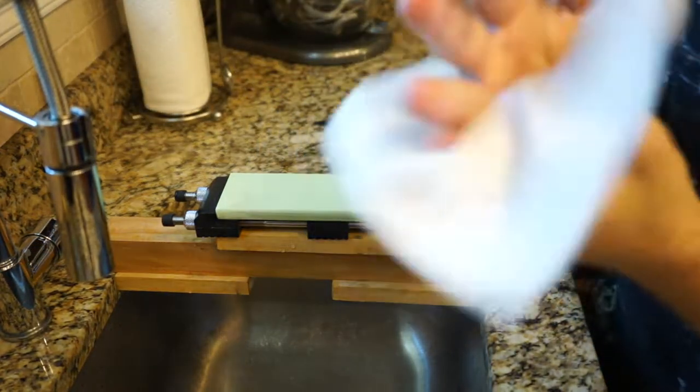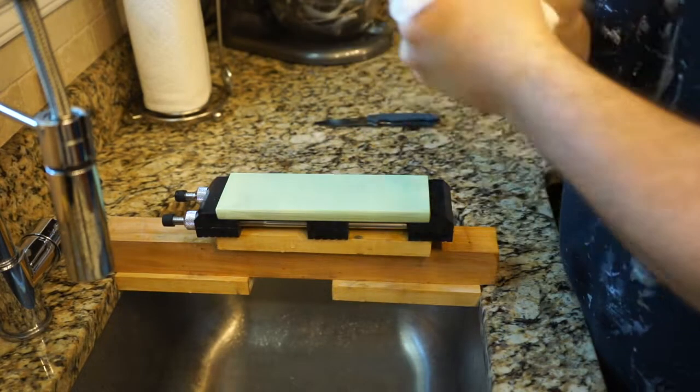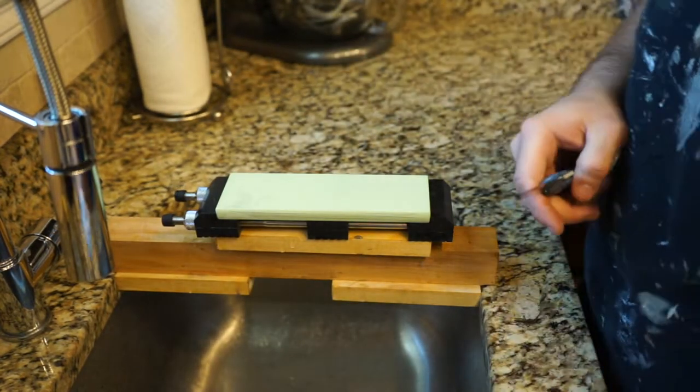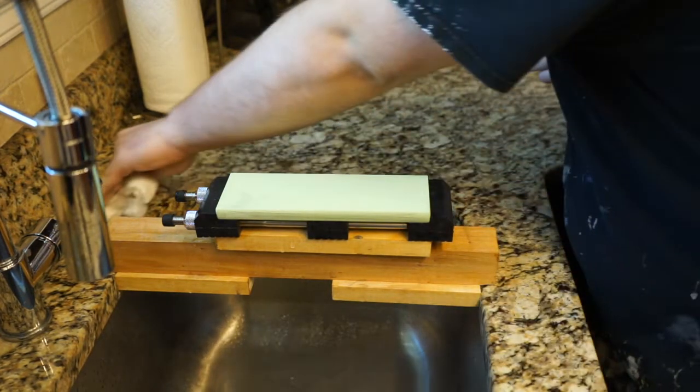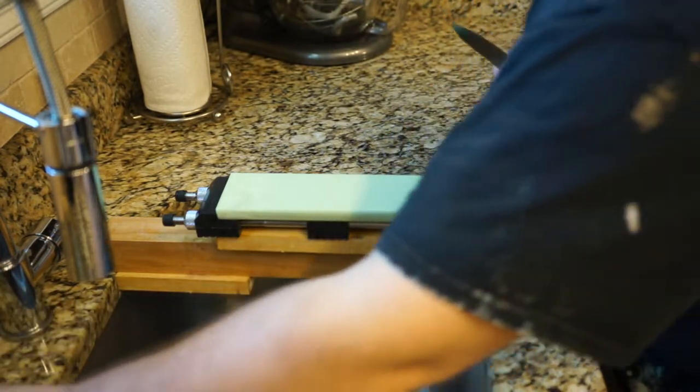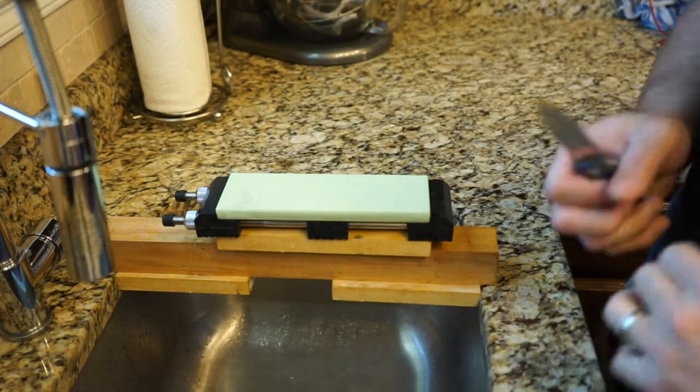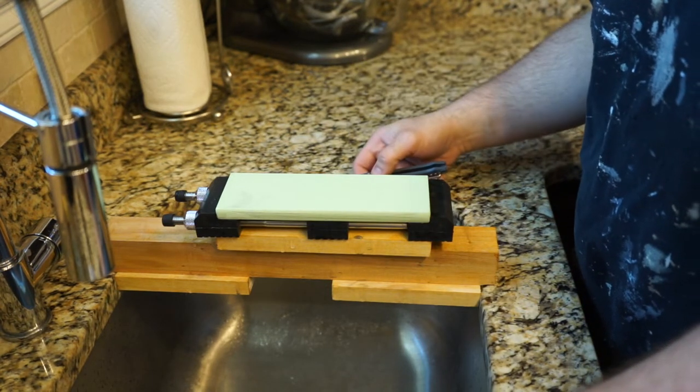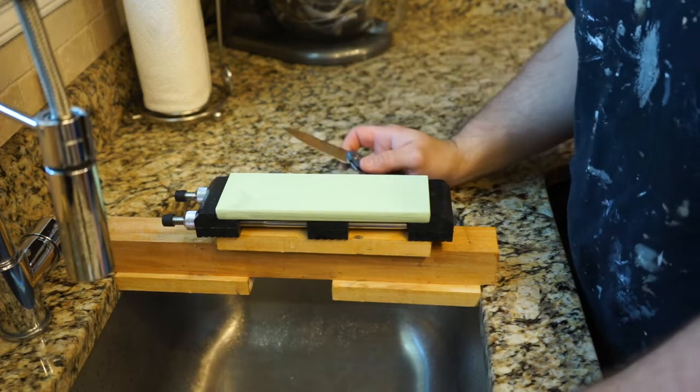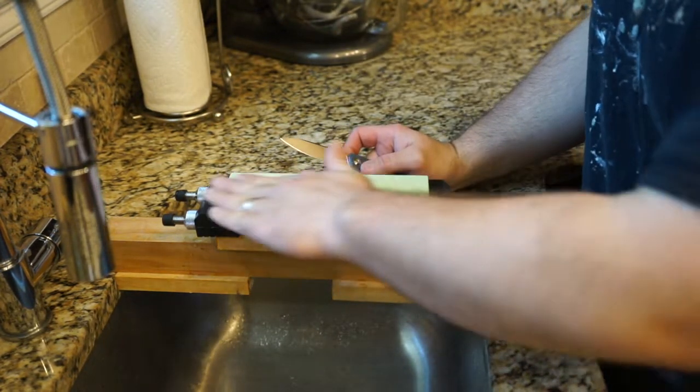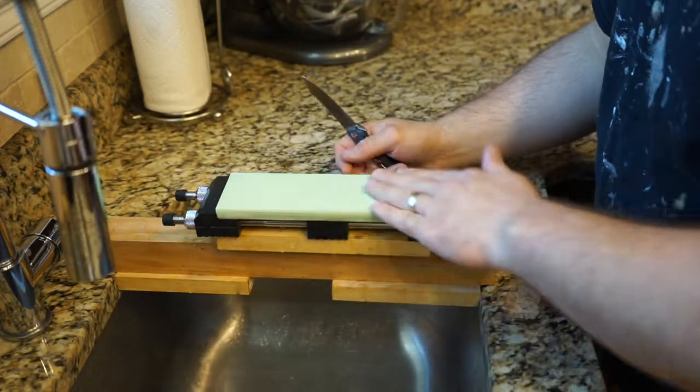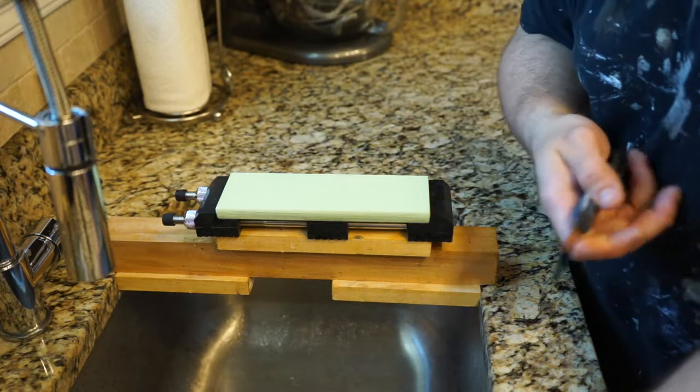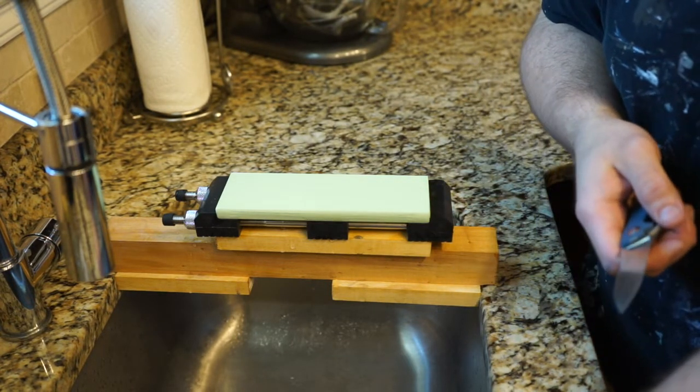These are good stones for a lot of steels. Once you start getting into your higher carbide volume steels, like your 10V class, the Shapton Pros aren't going to do it. The Shapton glass, you can sharpen just about everything, but you're not going to be able to sharpen like your Maximette. Even like your S110V might start getting a little tricky, like Rex 121, Rex 45. Once you start getting into those really wear resistant steels, it starts getting to where you need Diamond and CBN. So, the cutoff for these, for me, is usually like ZDP 189. S110V, I'll use Diamond.